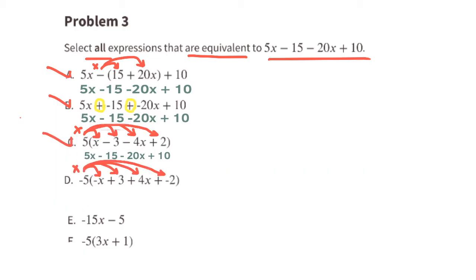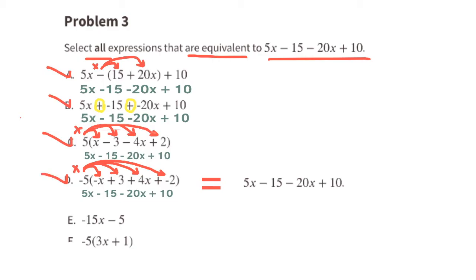Option D: negative 5 times a negative x is a positive 5x. Negative 5 times a positive 3 is a negative 15. Negative 5 times a positive 4x is a negative 20x. Negative 5 times a negative 2 is a positive 10. This expression is also equivalent to the original expression.